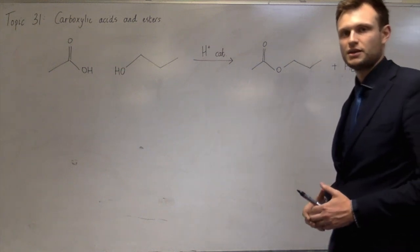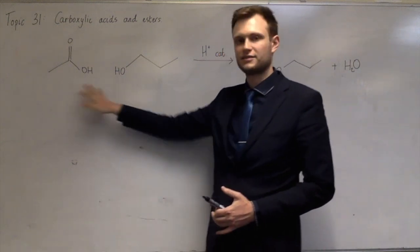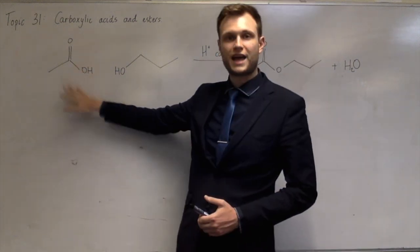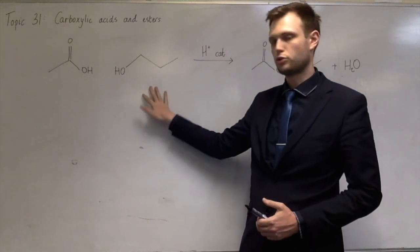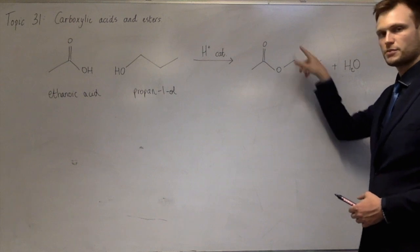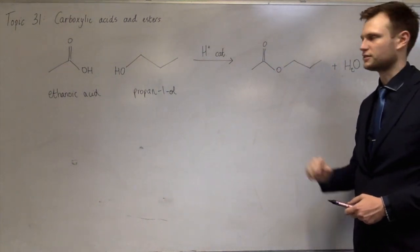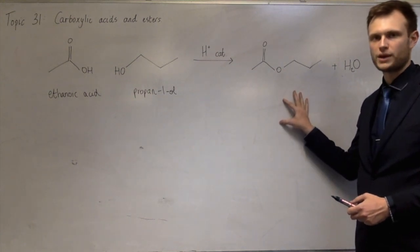And when you're naming esters, it's easy if you go back to the things that it was made from. So the carboxylic acid and the alcohol. Now this was ethanoic acid and this was propan-1-ol. And with esters, you name this part first. So the propyl group and that's on an ethanoate. So this is called propyl ethanoate.